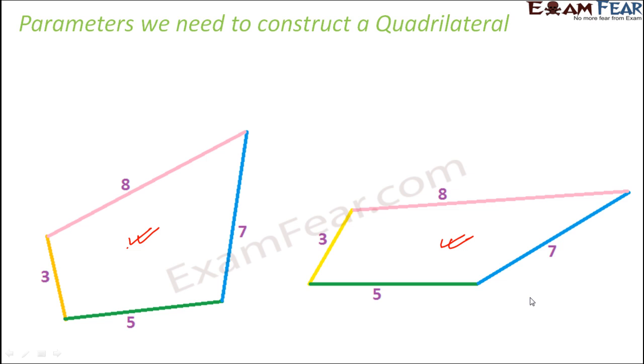But you need some information about all of them. So we can draw a quadrilateral if we know three sides and two angles of the quadrilateral. We can also draw it perfectly if